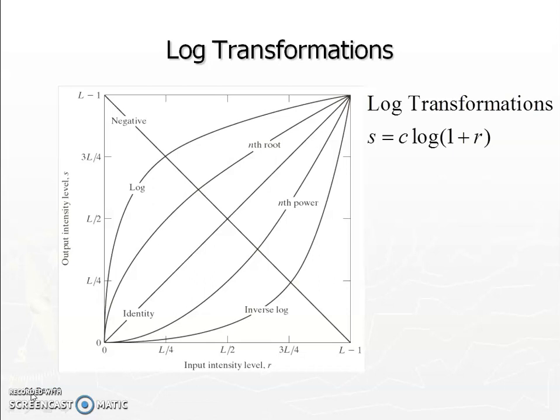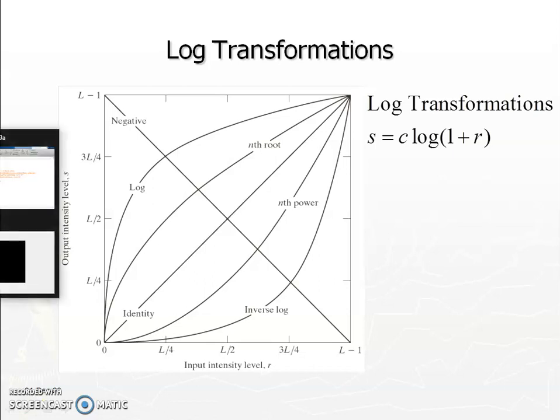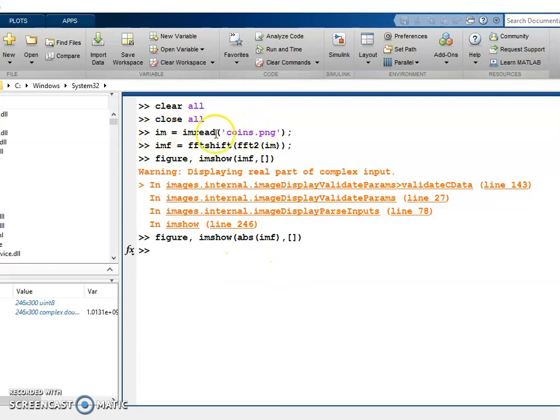Because of the large dynamic range in the spectrum — for example, one coefficient near 100 and many others like 2.1, 3.5, 8.6 — the smaller values all appear nearly zero. If we want to see the variation in smaller coefficients, we need to reduce the dynamic range of the peak. In MATLAB, we compute the FFT2, apply fftshift to center the spectrum, then display the absolute magnitude.